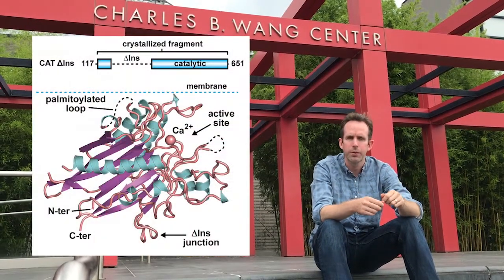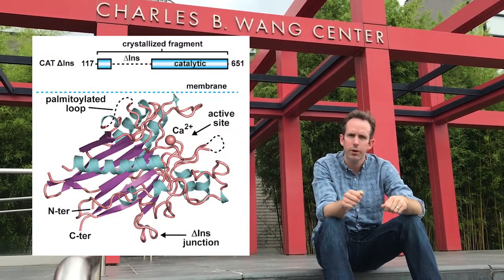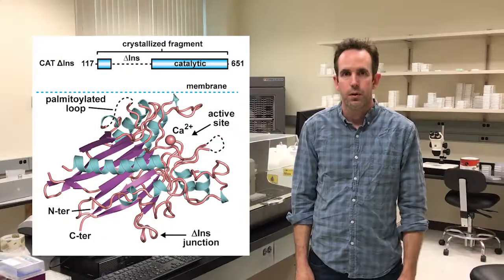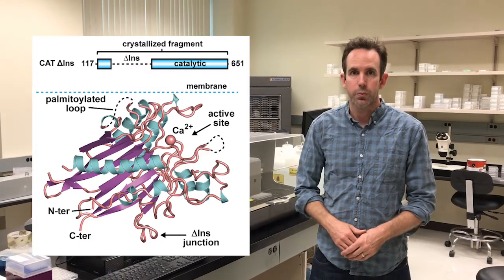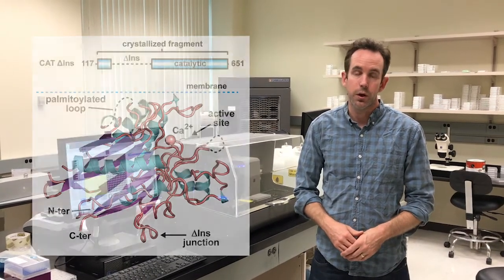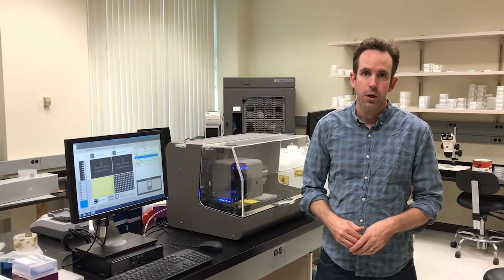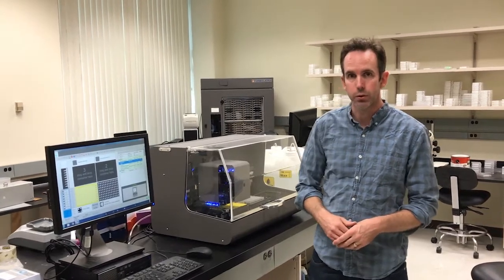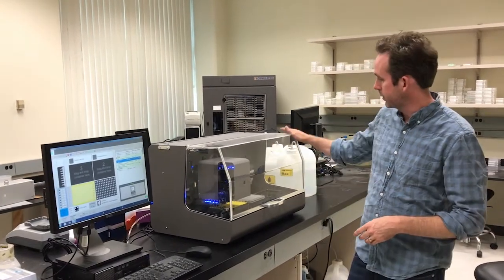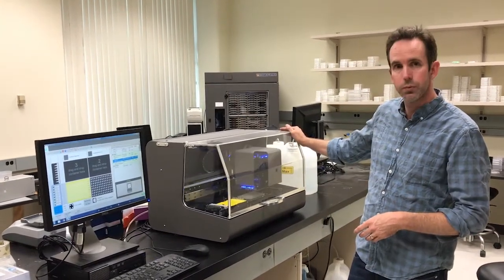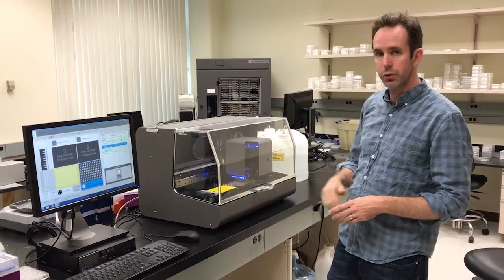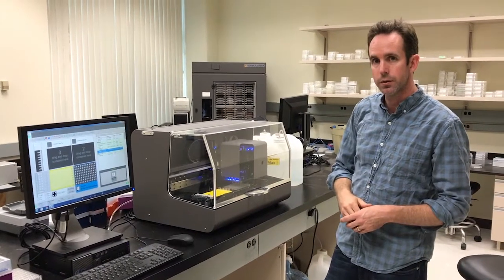We were able to understand how this happens by using the first crystal structure of the catalytic domain. To determine the structure of neutral sphingomyelinase II, we had to screen thousands of different conditions, and we did that here at the Stony Brook Structural Biology Center. It's equipped with a robot dispenser for setting up trays, as well as a hotel for storage of these trays and imaging analysis.